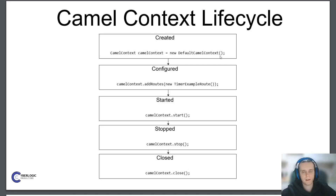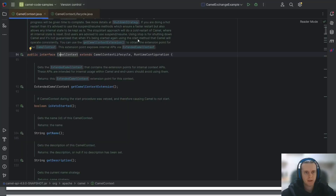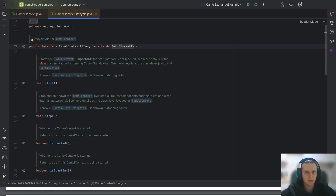First, CamelContext is created — here you can see DefaultCamelContext, which is used when we have a standalone Camel application without Spring Framework. Then all necessary entities like routes are added to the context. Then the context is started and all routes begin receiving and sending messages. When we don't want to run our integrations anymore, we stop the context. Finally we close it. CamelContext implements AutoCloseable, so we can use try-with-resources to close it automatically.